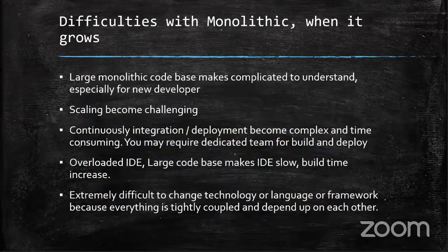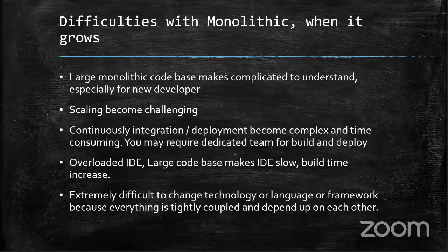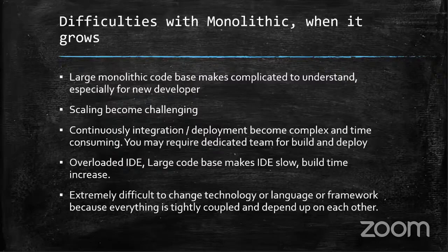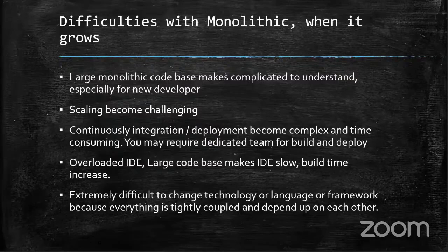So what are the difficulties with monolithic when it grows? If you have a large monolithic codebase, think of yourself as a new developer seeing a huge number of lines of code — it makes you fear where it starts and where it ends. Constructing a large application is very hard with monolithic architecture. Scaling also becomes very challenging. From a DevOps end, continuous integration and continuous deployment is scary. With microservices it's much easier — I have containers, Docker, Azure Container Registry — I can do containerization and deploy directly to DevOps. But with monolithic, it's very difficult.